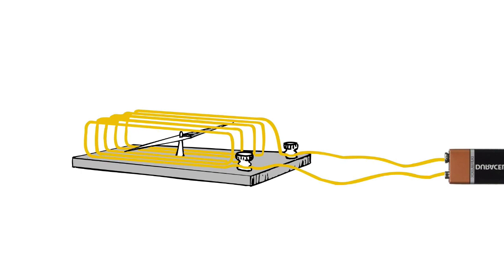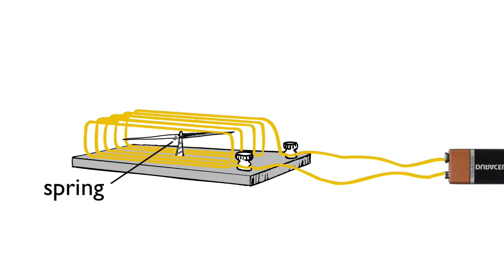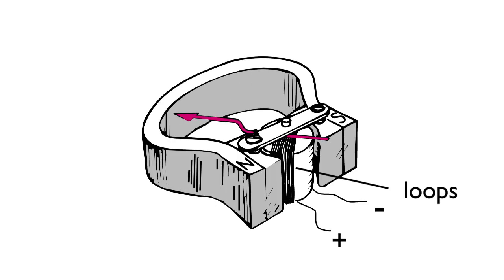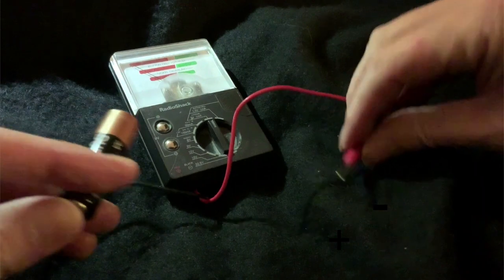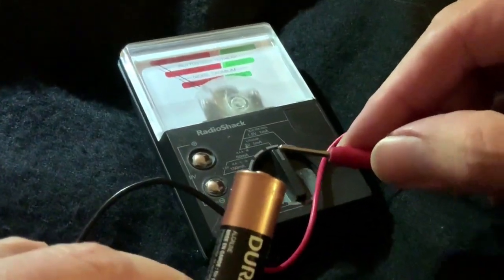And the greater the current, the greater its tendency to turn. Now, let's add a spring to push back against the turning needle, which you then attach to a coil of many loops. The stronger the current, the greater the needle will push against the spring. Add some calibration, and you've created an electric meter.